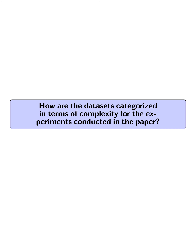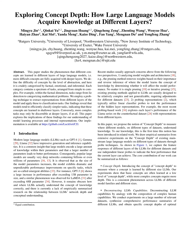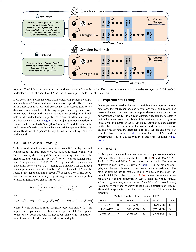How are the datasets categorized in terms of complexity for the experiments? The datasets are categorized into easy and complex datasets based on the performance of LLMs on each dataset. Easy datasets are those where linear probes can achieve high classification accuracy at the initial or middle depth of the LLMs. Complex datasets are characterized by large fluctuations and stable classification accuracy occurring at the deep depth of the LLMs, requiring deeper layers for stable classification accuracy.